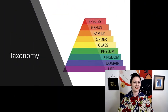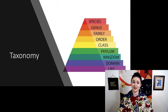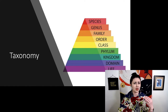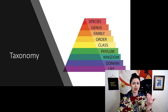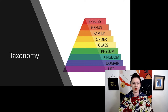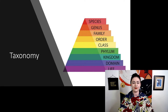Now let's talk about taxonomy — that really annoying system where you have to remember: life, the domain, kingdom, phylum, class, order, family, genus, species. Also that thing I've been harping on you for the past couple months.